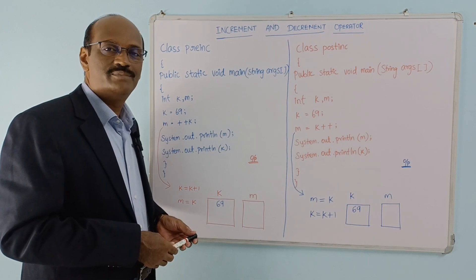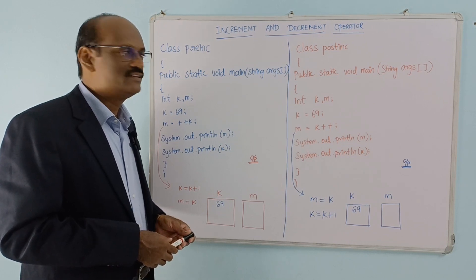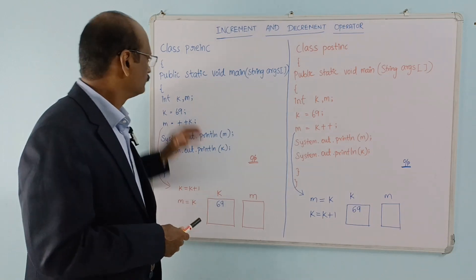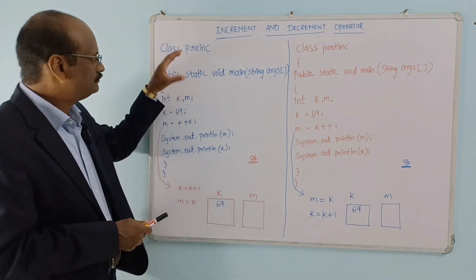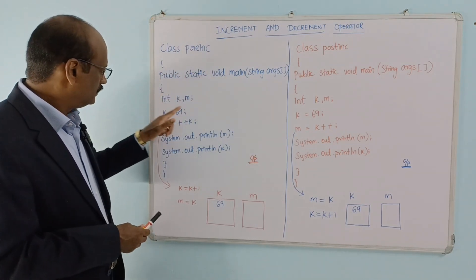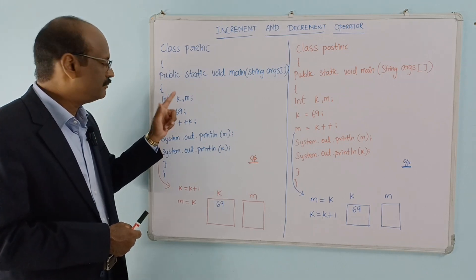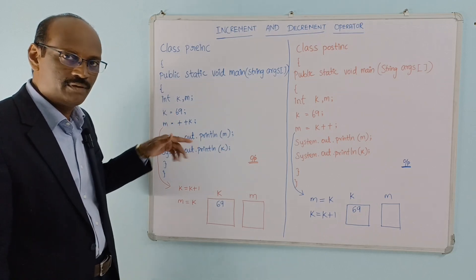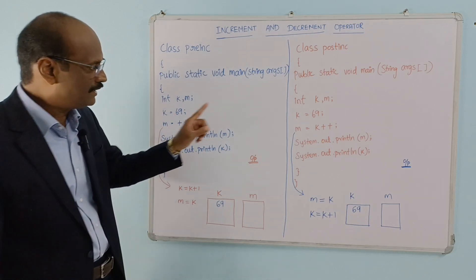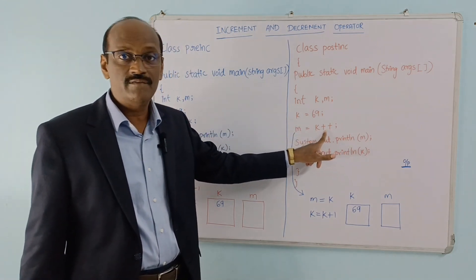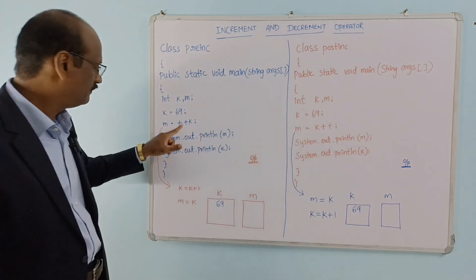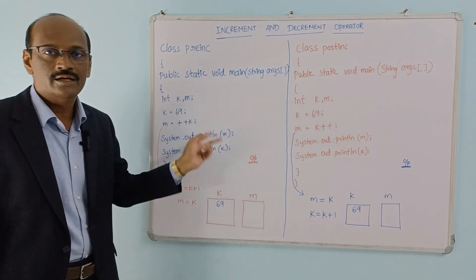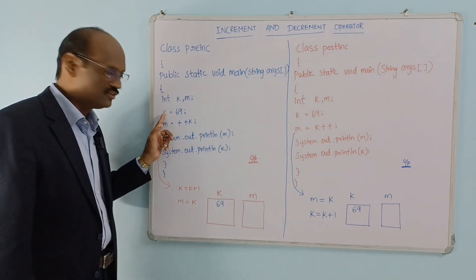Hi friends, welcome to Logic Bits. I am Minoth Kumar. In this video we will discuss one more program. In the class, Lab, main method, we are using pre-increment operator and post-increment operator. We will discuss the difference between the two. The k value is 69.